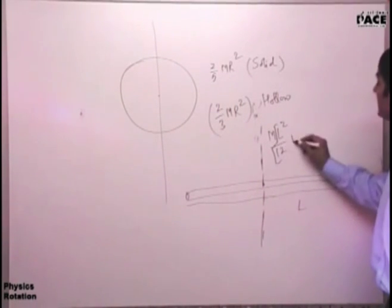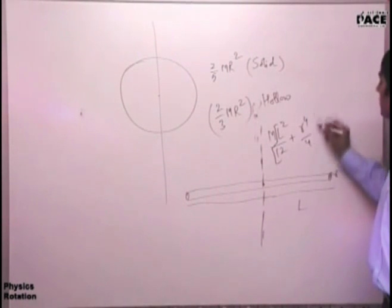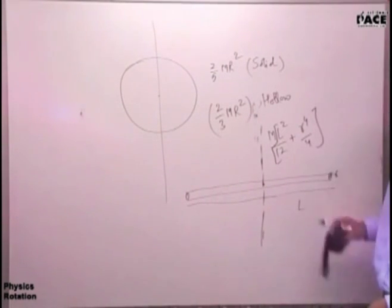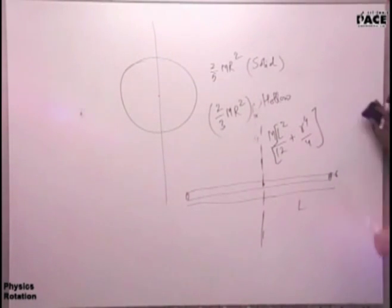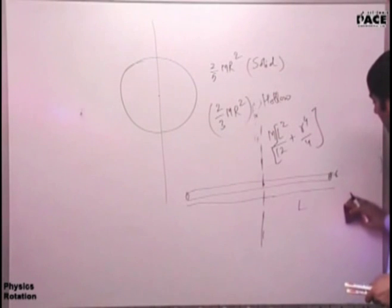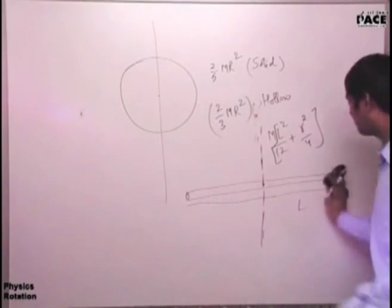ML squared by 12 plus R squared by... R squared or R4 by 4? I don't remember. Yeah, I don't remember. So you will see in the book. Yes, definitely R squared will be there. R squared means that the dimension will be better.